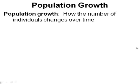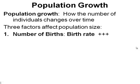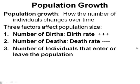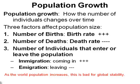Now let's look at population growth — how the number of individuals changes over time. We have three factors that can affect population size. One, it's the number of births, or the birth rate. Two, it's the number of deaths, or the death rate. And third, it's the number of individuals that enter or leave the population — immigration, coming in, and emigration, leaving. Use the I to think of 'in' for immigration, and E for 'exiting' for emigration.